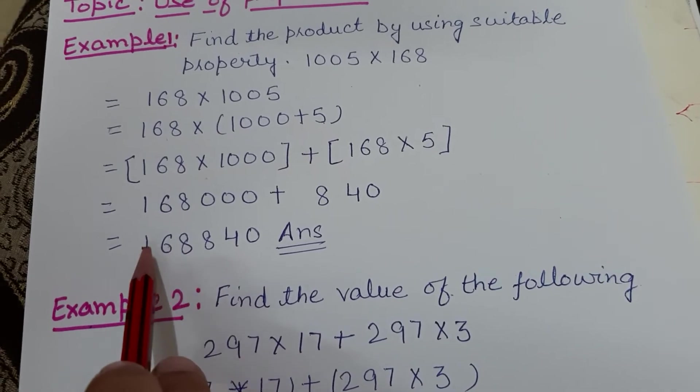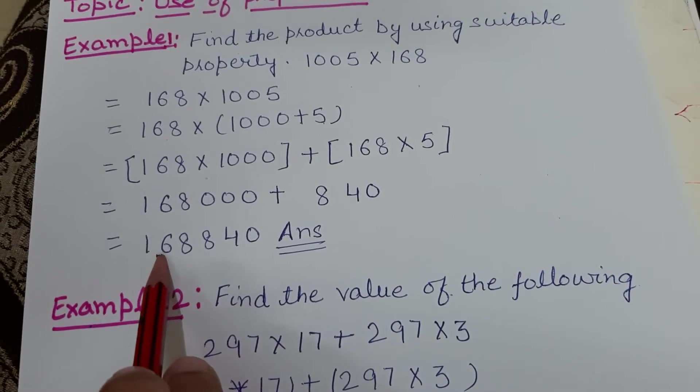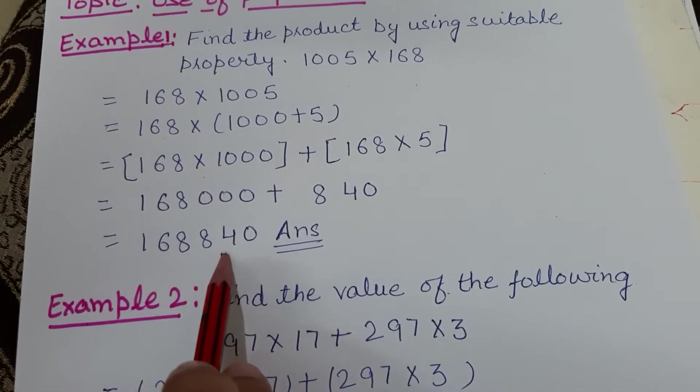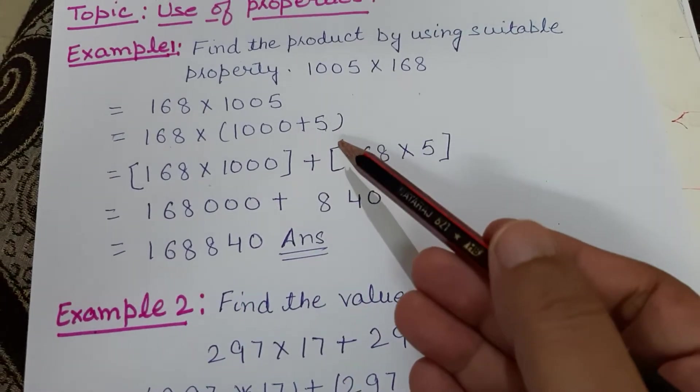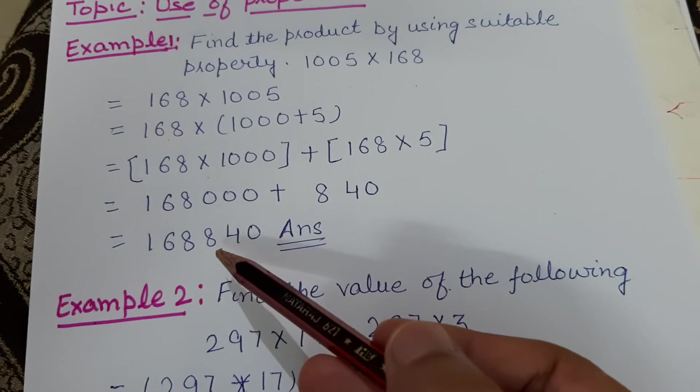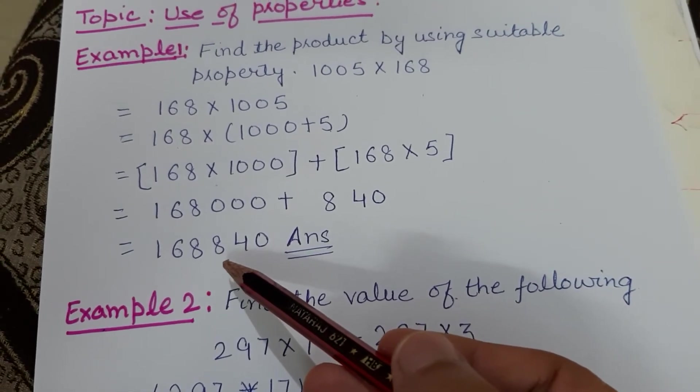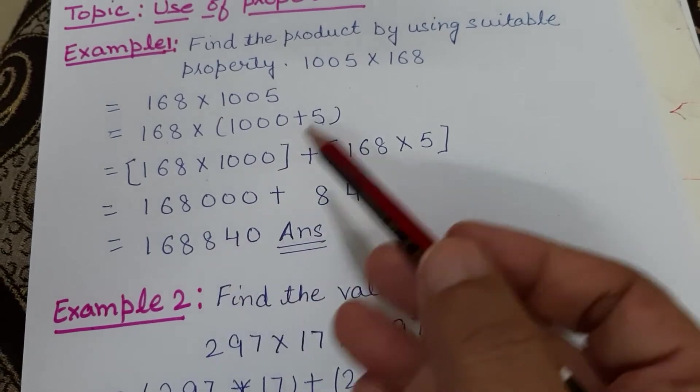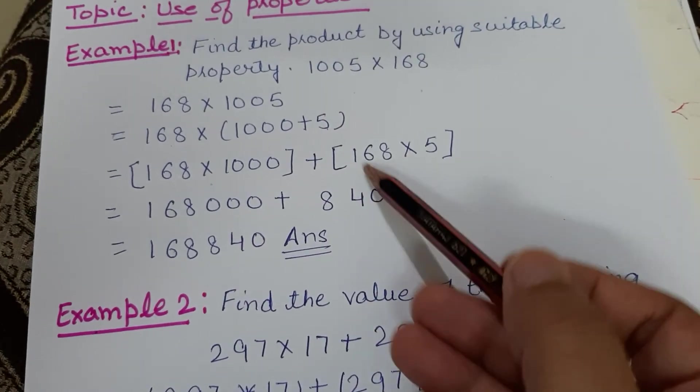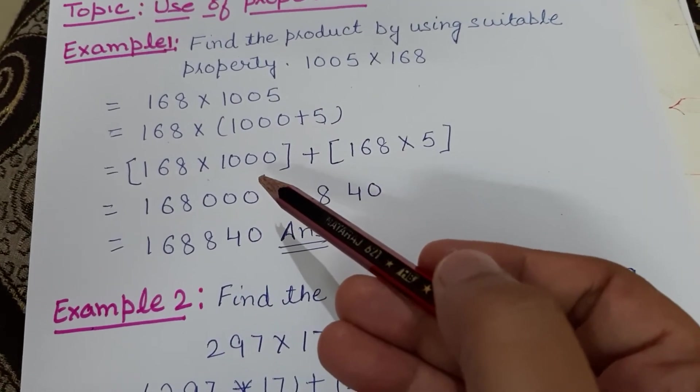You know these tricks—because all these three places are zero, these places will be written as is with this number. So we are getting 168,840. See, without writing in columns we got our answer. Your sum has become easier by using distributive property. Clear to all?